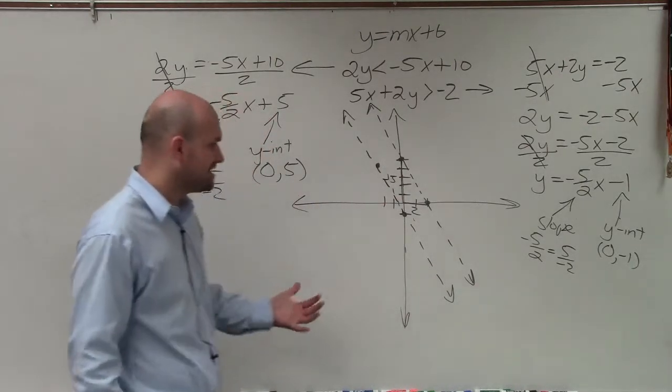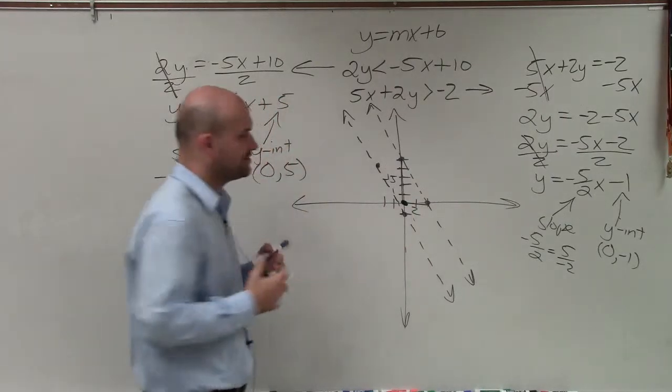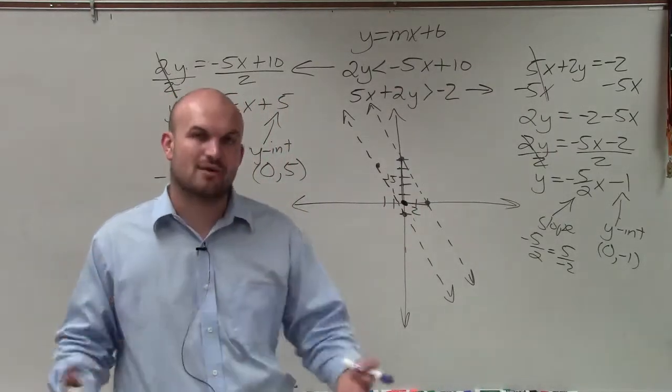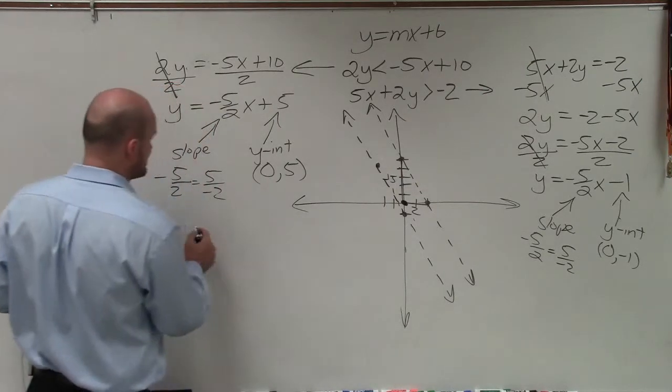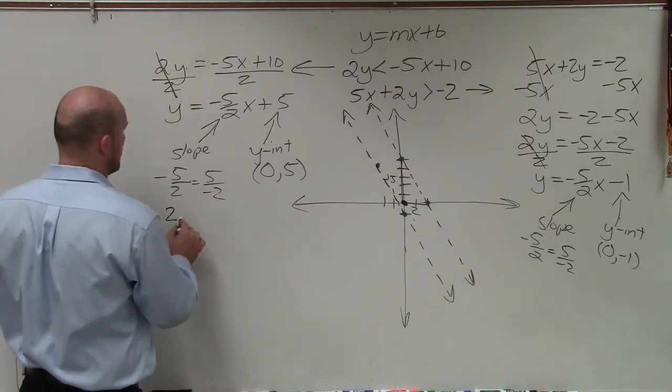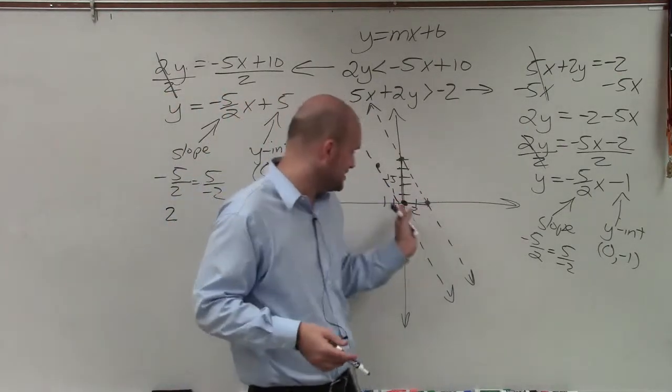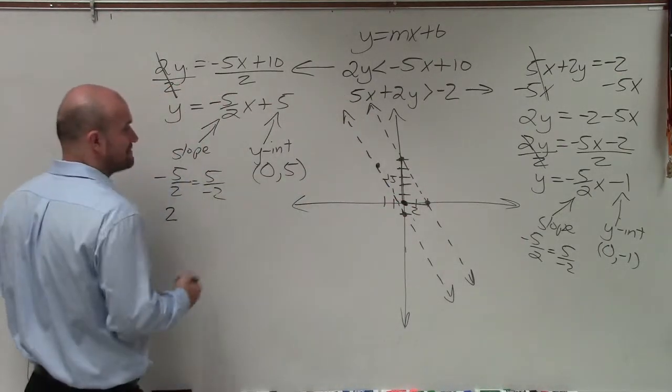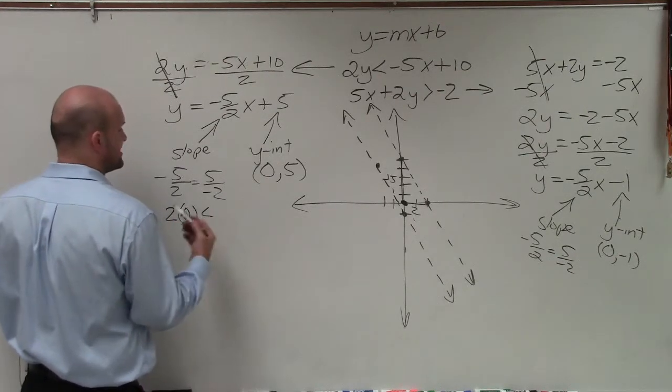Now the best point to choose for your test point is going to be 0, 0. And what we want to do is now that we have both boundary lines graphed, we want to be able to determine where exactly is the shading going to be. So the easiest way to do that is to take both of your inequalities and plug in your test point. And the best test point, again, is the origin 0, 0. As long as your graphs do not lie on your test point.